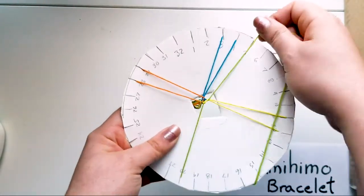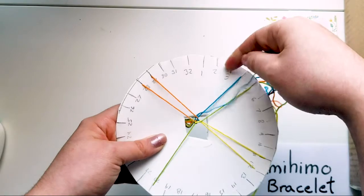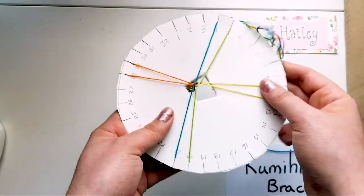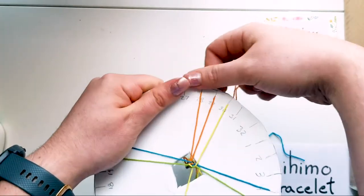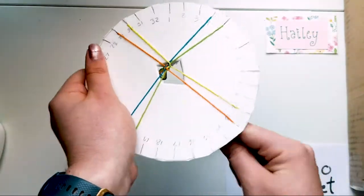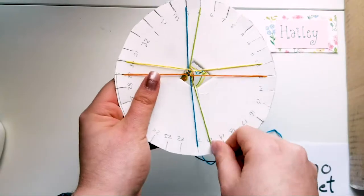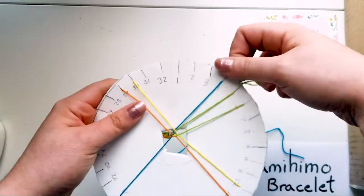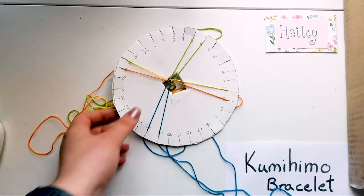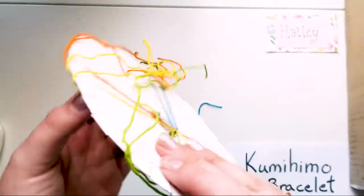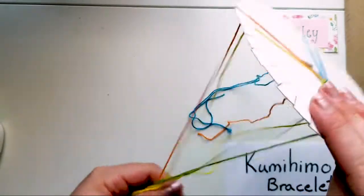The big thing with these bracelets is just consistency. So if you go counterclockwise, that's okay, as long as you keep going counterclockwise. Or if you do something different, just keep doing that because otherwise it can get kind of confusing. So the nice thing about these bracelets is you can really just set this down. It doesn't lose its place at all. And then you can always just pick it back up.